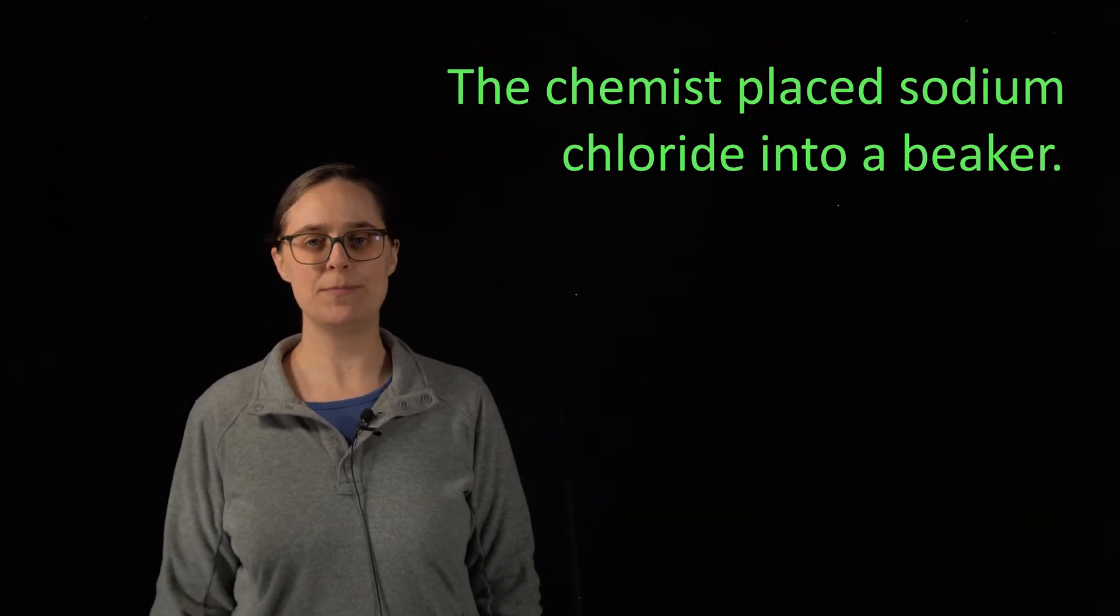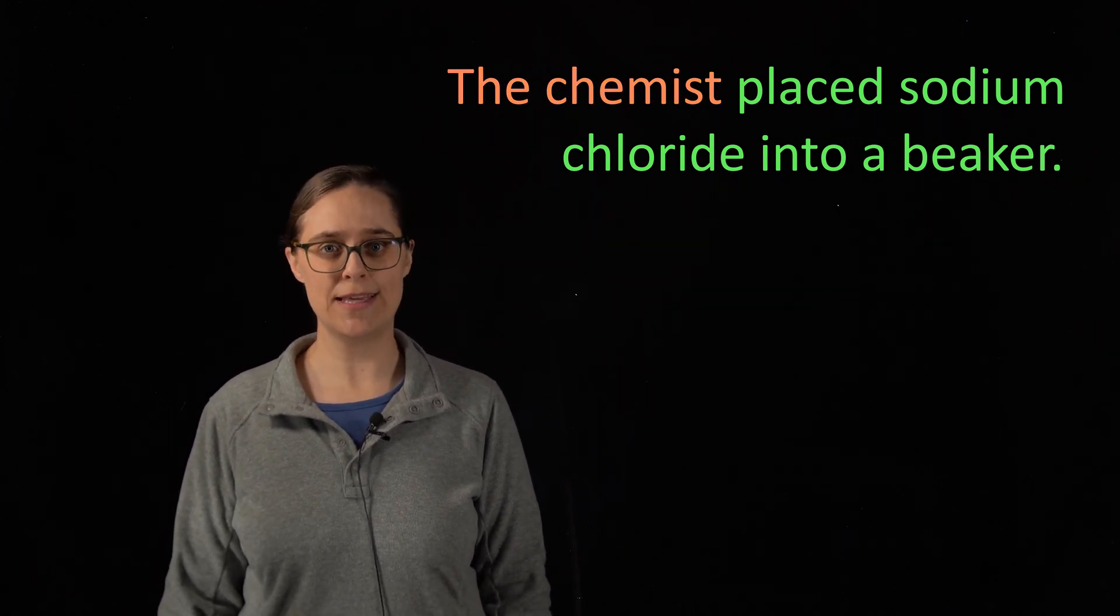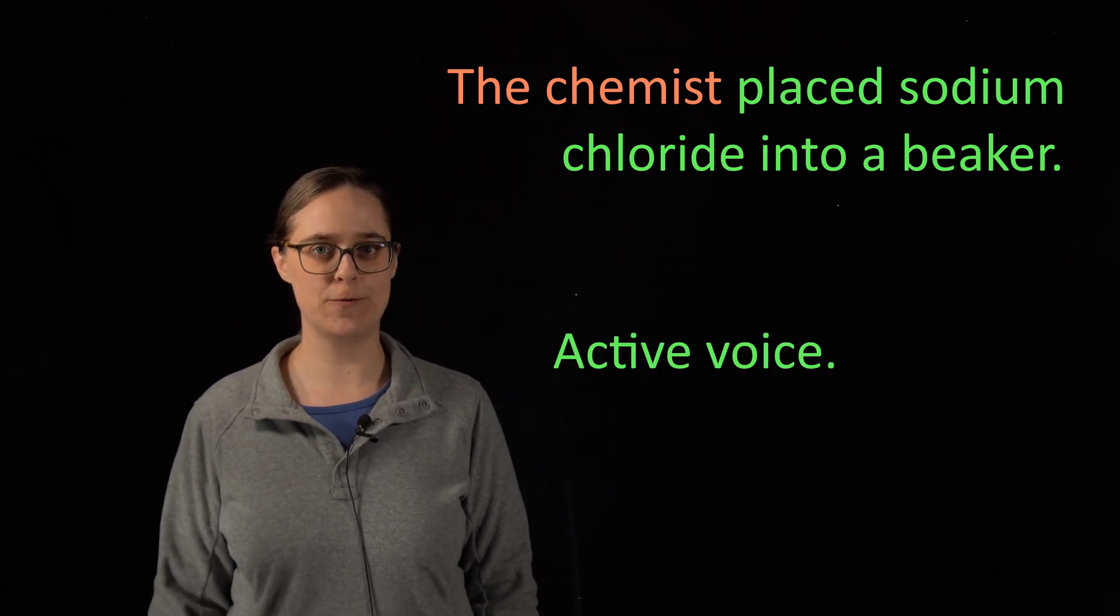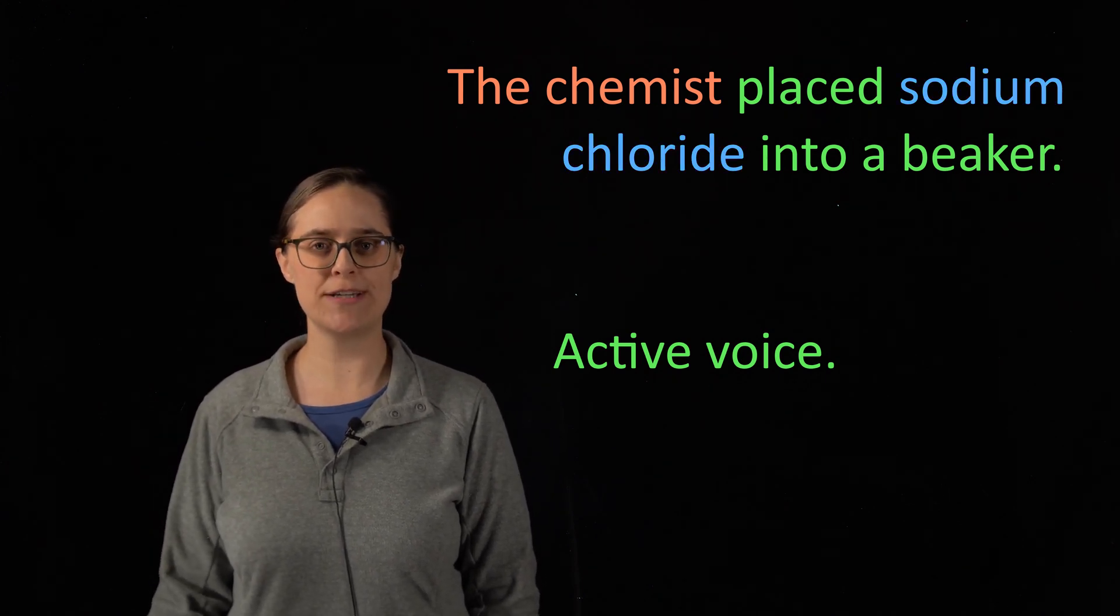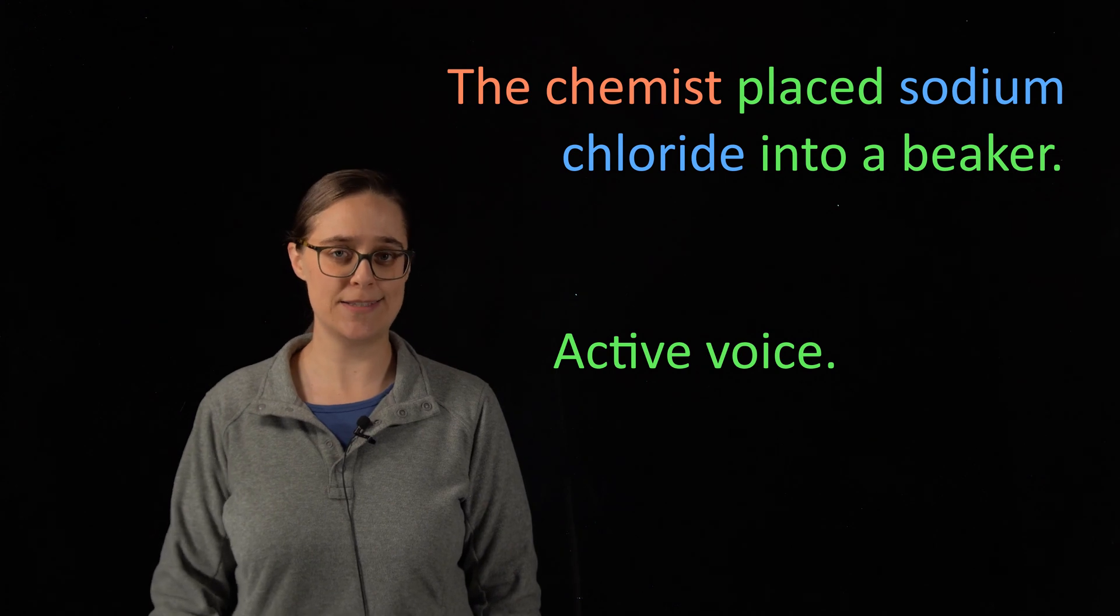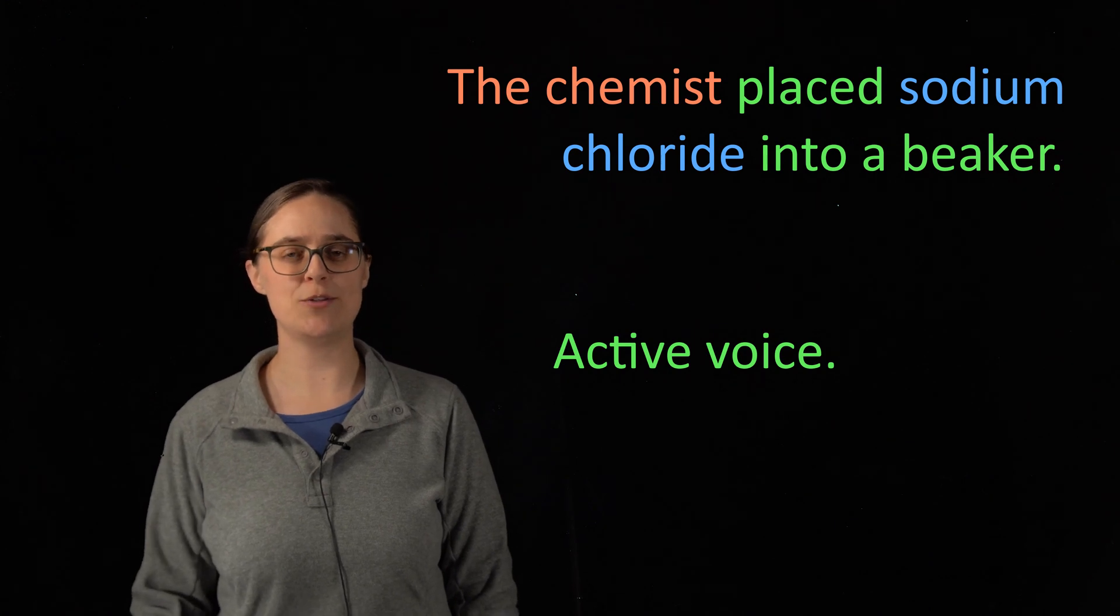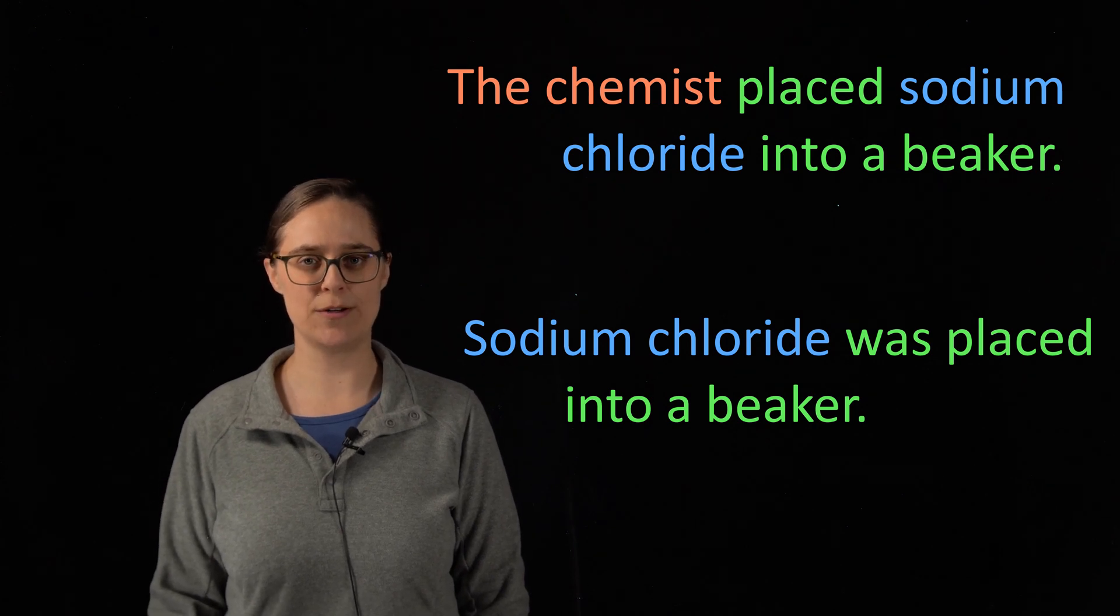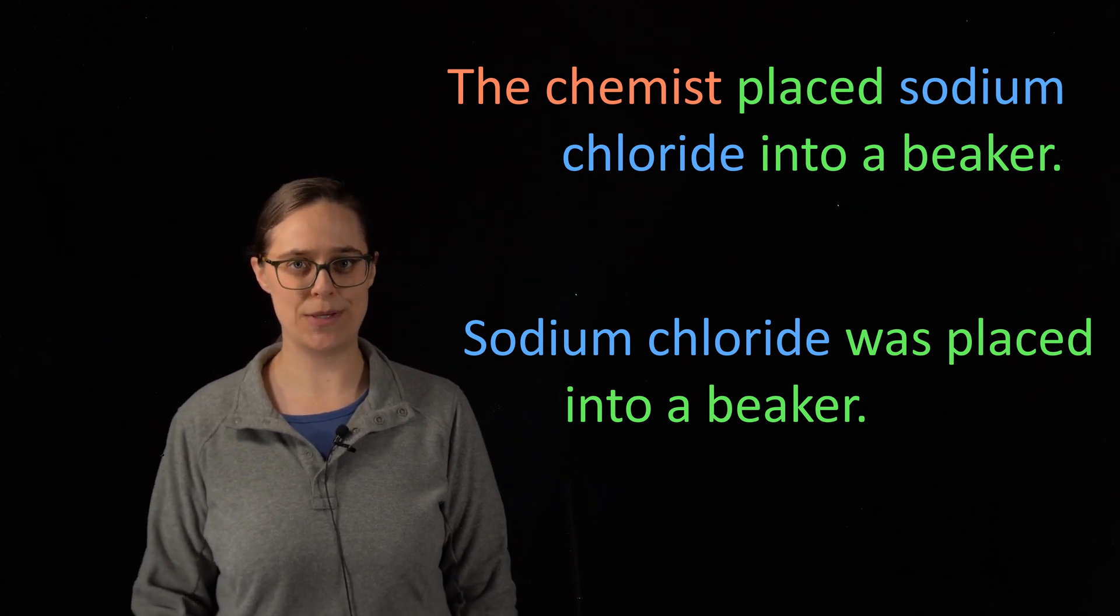First sentence. The chemist placed sodium chloride into a beaker. The subject of this sentence is the chemist and the chemist is performing the action. Placed sodium chloride into a beaker. So this is an active voice. In order to convert this into passive voice, we need to pick out what object in this sentence the verb's action is being performed on. In this case, that is sodium chloride. When we convert this into passive voice, sodium chloride needs to be our new subject. So we want to say sodium chloride was placed into a beaker. Or if you really need to specify who did this, sodium chloride was placed into a beaker by the chemist.